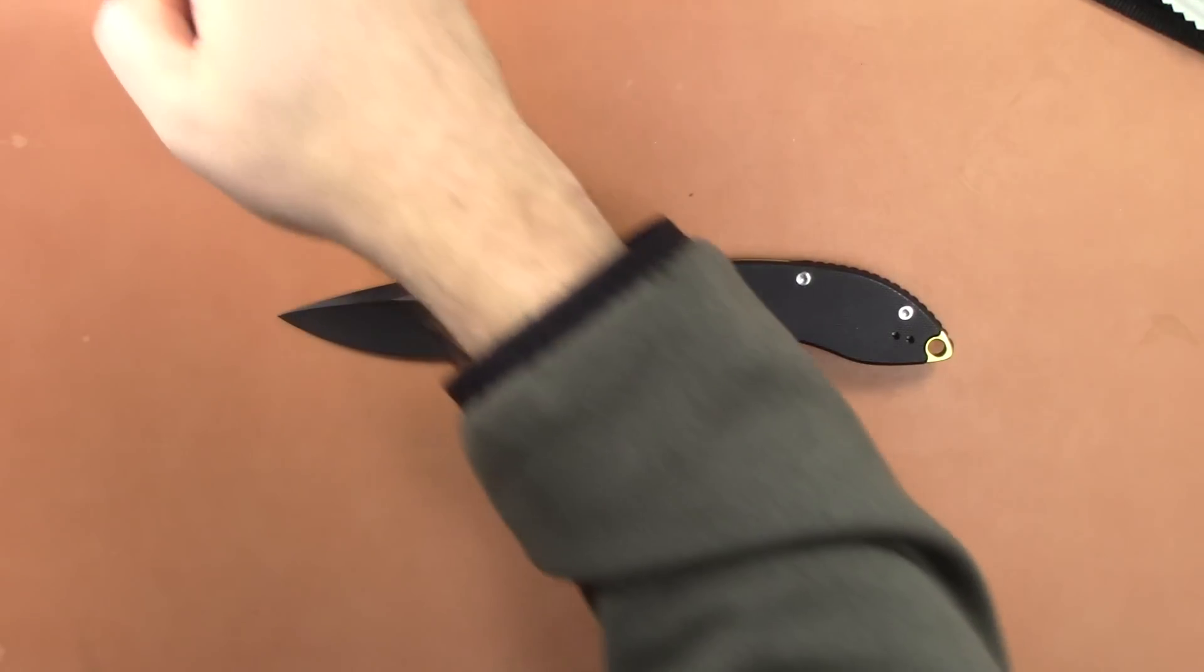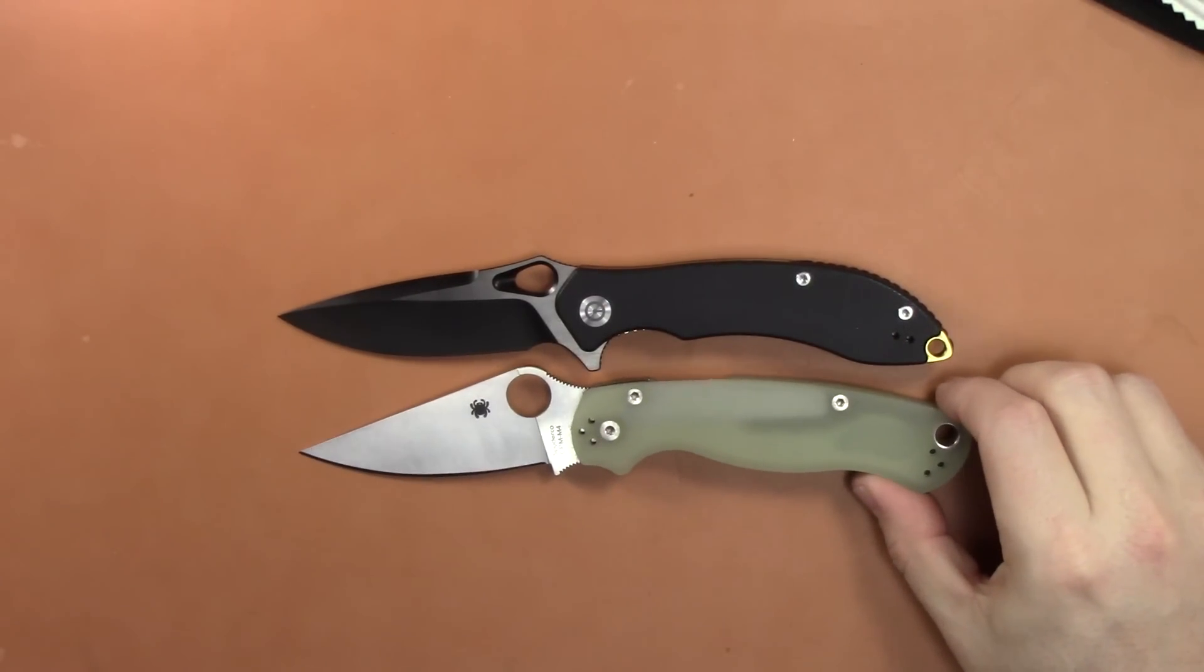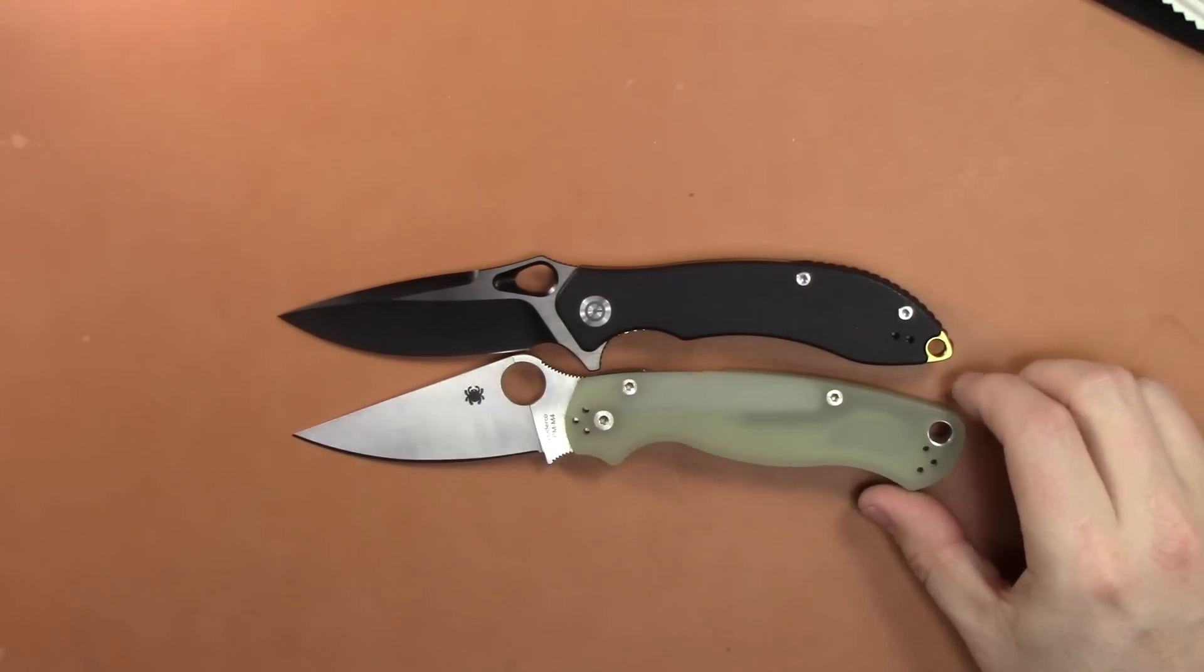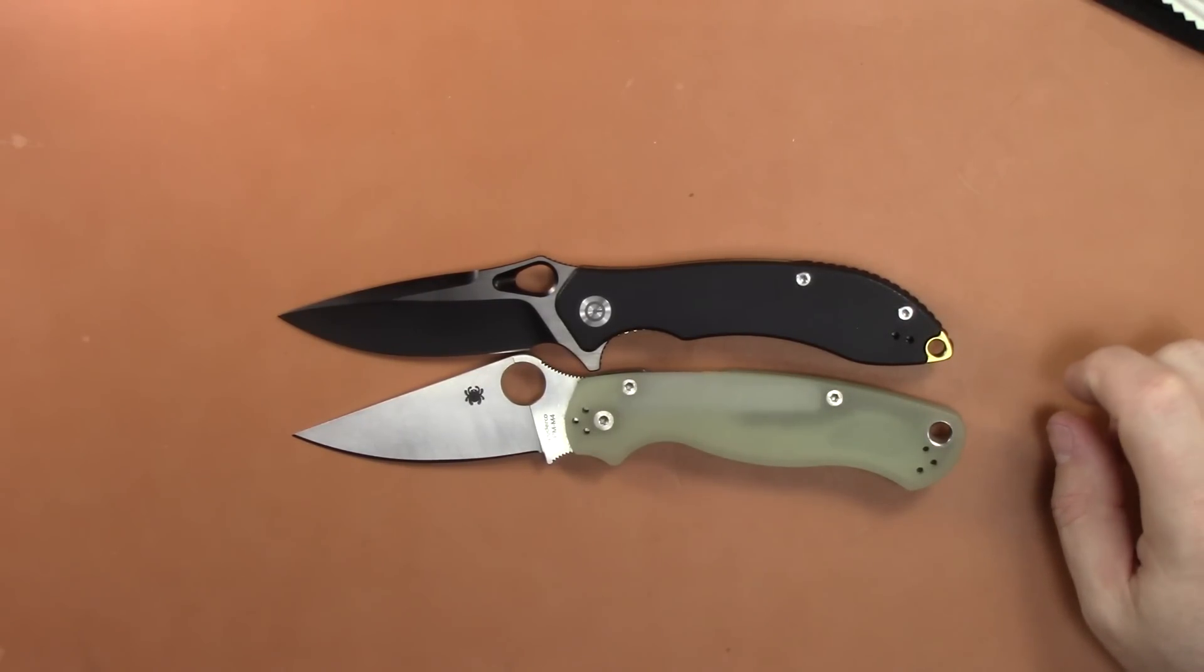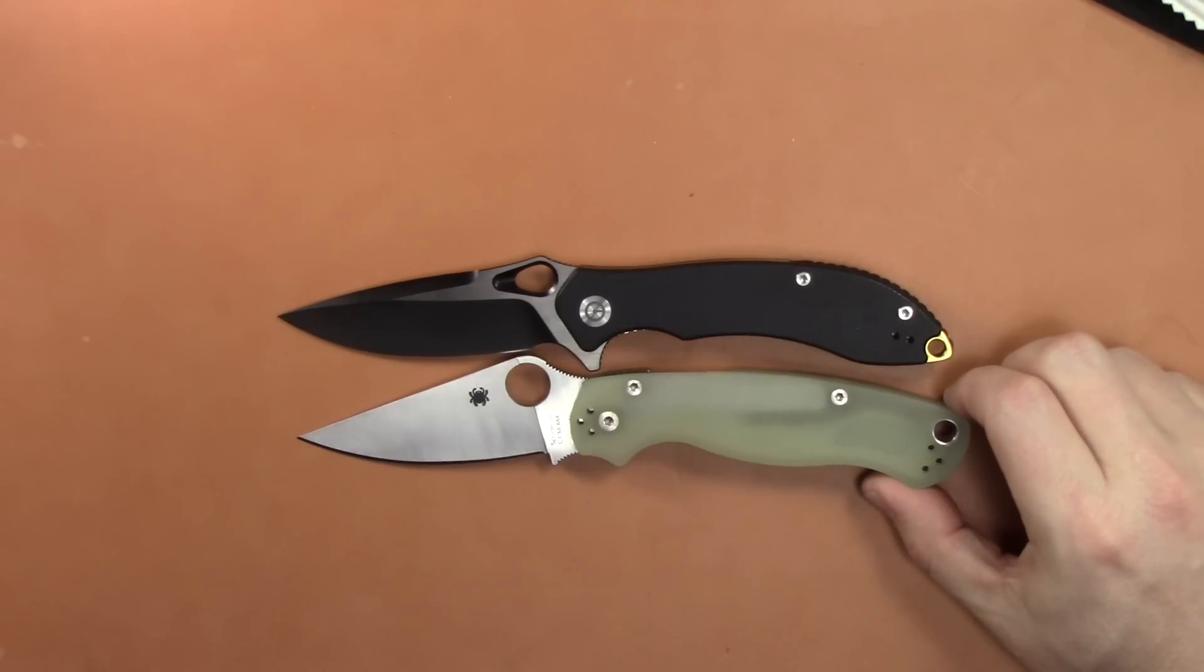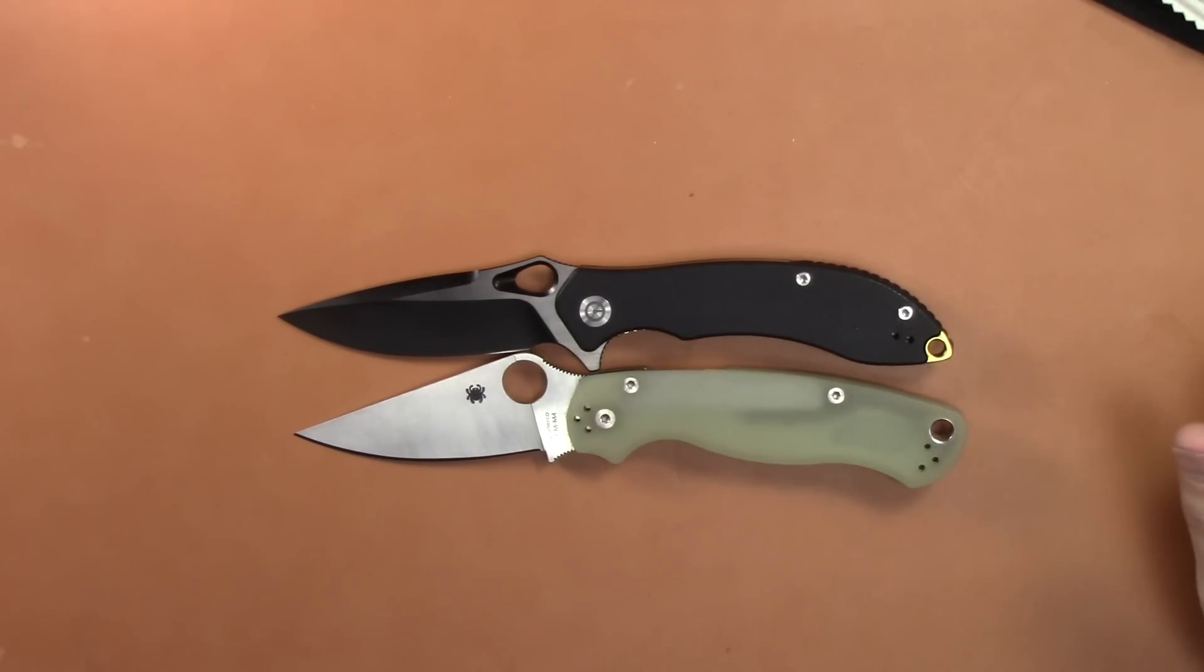Let's do some size comparisons while I'm thinking about it. We've got the Paramilitary 2 here. So it's nearly the same size as the Para 2. Notice that it has more cutting edge, though.